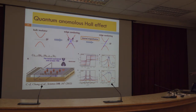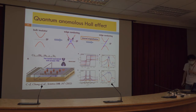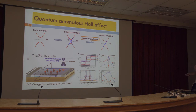We can realize the quantum anomalous Hall Effect by removing one channel of the topological insulator. A seminal work published in 2013 by Professor Xue Qikun's group realized the quantum anomalous Hall Effect for the first time by doping the magnetic element chromium into the topological insulator. This panel is the smoking gun: the longitudinal conductance is almost equal to zero, and the transverse conductance shows the quantized value. This is smoking-gun evidence of the quantum anomalous Hall Effect.